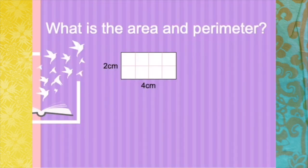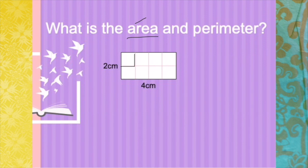So for example, we have here a rectangle. What would be the area and perimeter of this rectangle? Now if you would notice here, each side of the small squares inside your rectangle is one centimeter by one centimeter. So if it is one centimeter by one centimeter, we call it a unit square. That is the reason why the unit for area is actually in square. So to find the area, it amounts to counting the number of squares.